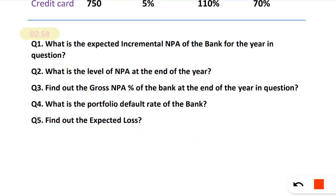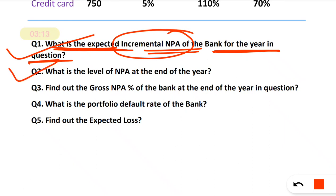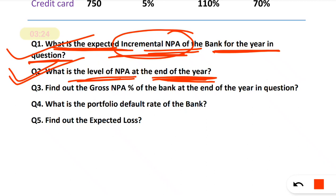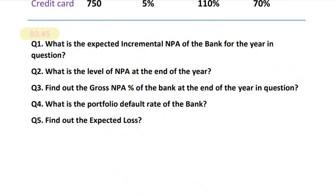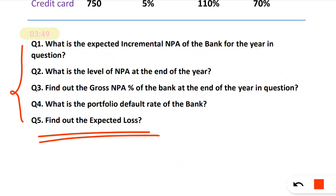Based on this data, five questions are asked: first, what is the expected incremental NPA of the bank for the year; second, the level of NPA at the end of the year; third, the gross NPA percentage at the end of the year; fourth, the portfolio default rate; and fifth, the expected loss.